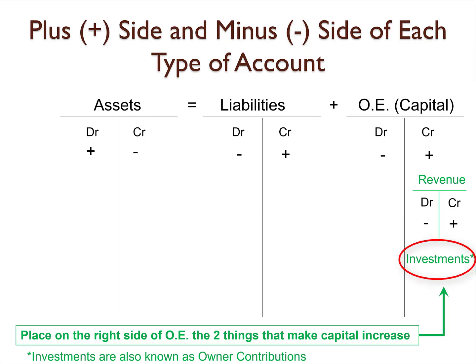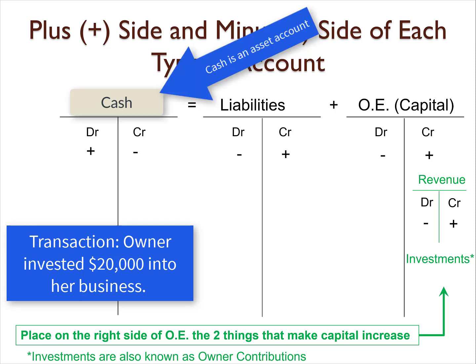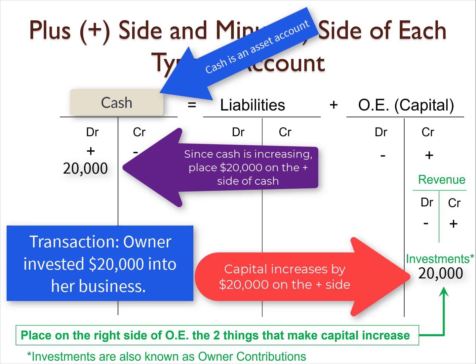Now let's talk about investments, also known as owner contributions. Notice there is no investments account — owner investments instead directly increase the capital account. So if the owner invested $20,000 of cash into the business, the cash account, which is an asset, increases by $20,000 on the left side, and the capital account increases on the right side.